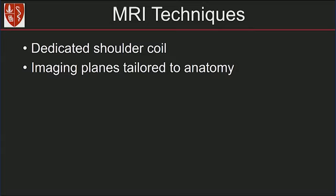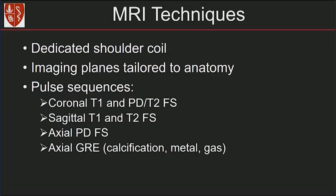Our shoulder protocol includes using a dedicated shoulder coil. We image the planes tailored to the glenohumeral joint. The pulse sequences are a combination of T1, proton density, T2 fat-suppressed images, and if there is concern for calcification, metal, or gas, we would add an axial gradient echo sequence.